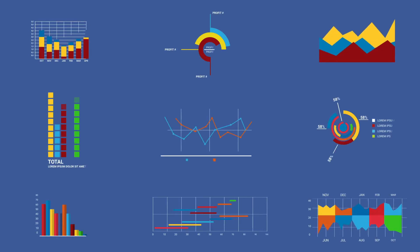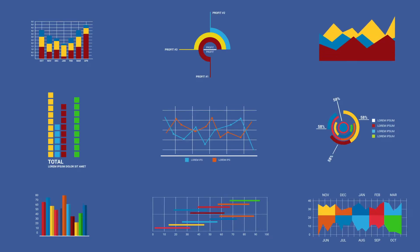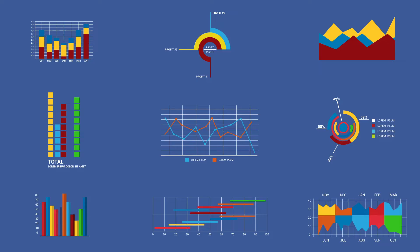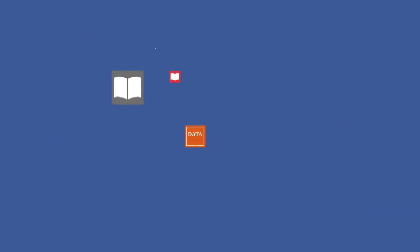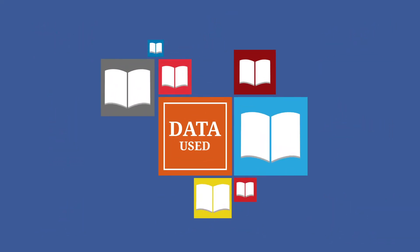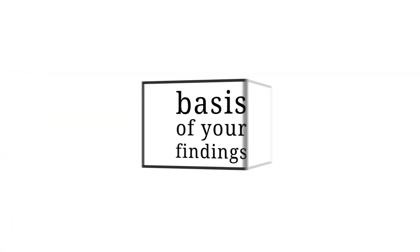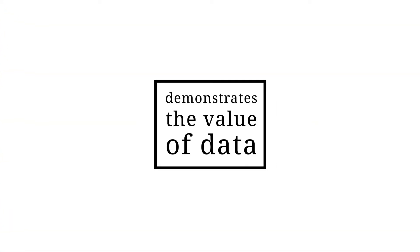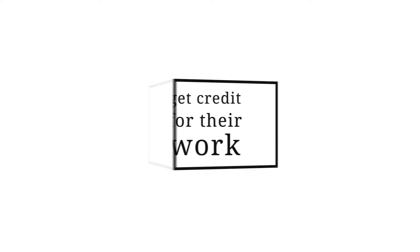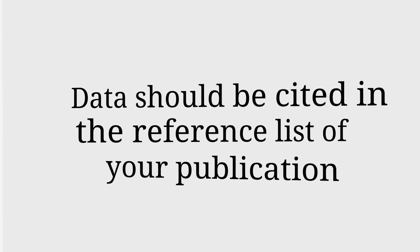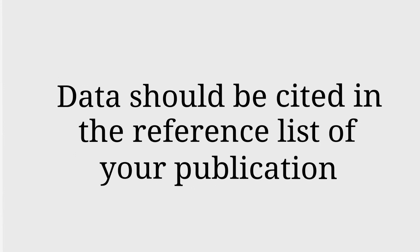Data is a valuable research output and an important primary source for novel research. Citing data you have used in your research helps others to understand the basis of your findings, demonstrates the value of data to funders, and makes sure the researchers who collected and shared the data get credit for their work. Data should be cited in the reference list of your publication, alongside any articles and other research outputs you have cited.